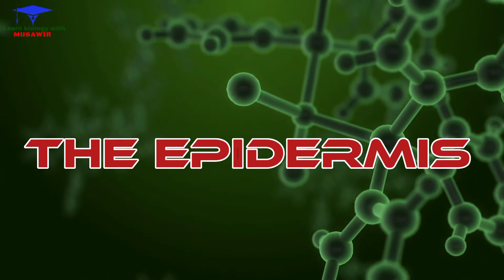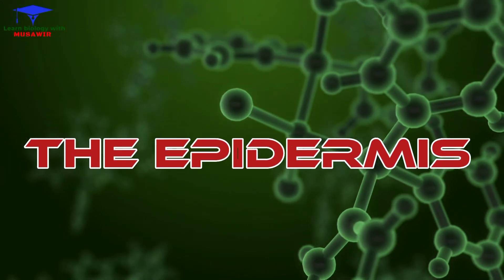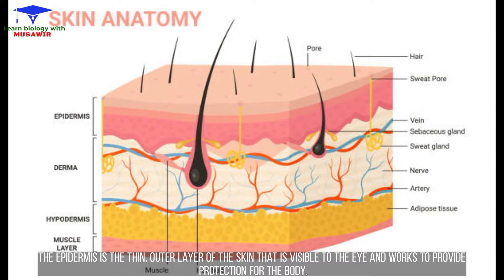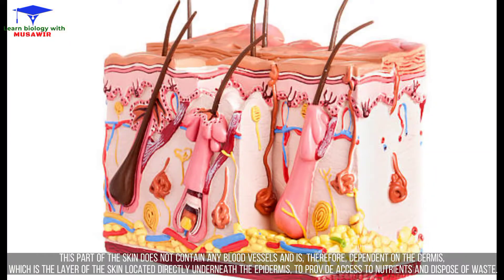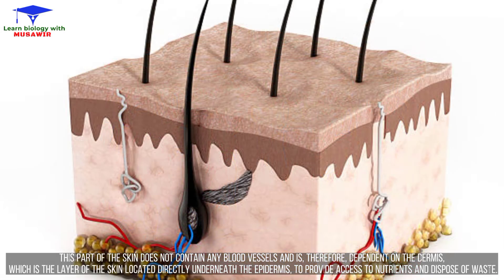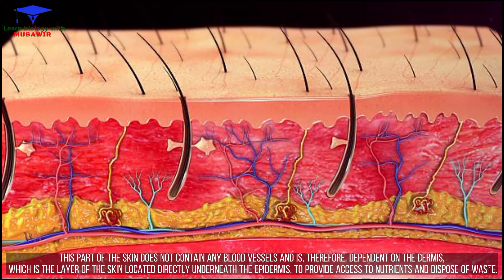The epidermis is the thin outer layer of the skin that is visible to the eye and works to provide protection for the body. This part of the skin does not contain any blood vessels and is therefore dependent on the dermis, which is the layer of the skin located directly underneath the epidermis, to provide access to nutrients and dispose of waste.